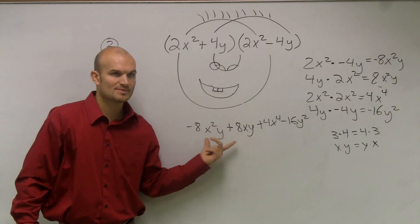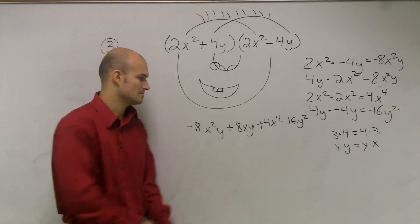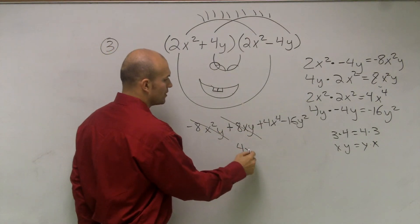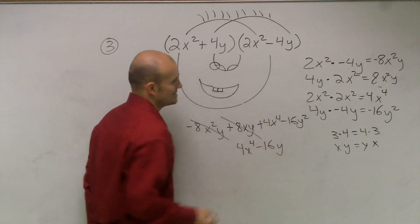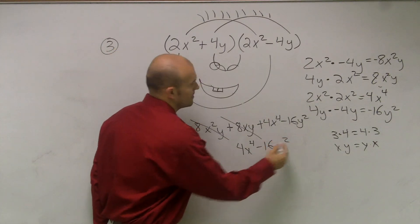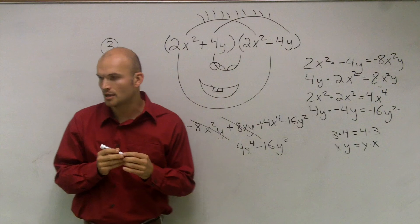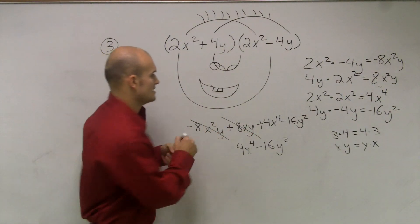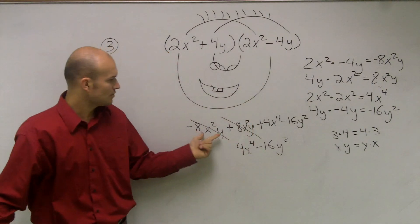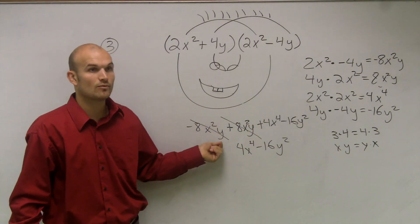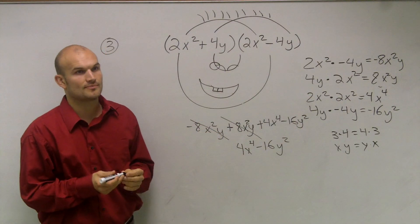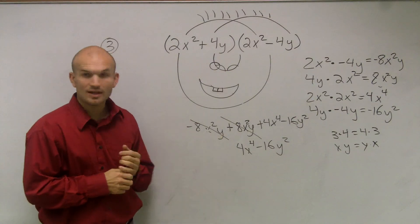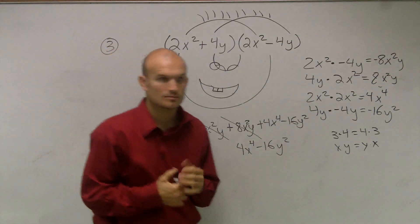Notice that these two terms cancel out. Therefore I'm only left with 4x⁴ minus 16y². This is actually a special product we'll talk about in a later class period. But it's important for you to understand that since these both have the same terms — x² and y — you can cancel them out. And therefore that's the final answer: 4x⁴ minus 16y².